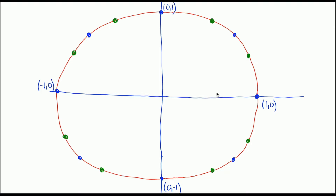Since I measure from the positive x-axis, the angle that terminates at the rightmost point is just 0 degrees. The angle that terminates at the top is 90 degrees, the left is 180 degrees, and the bottom is 270 degrees. It's worth pointing out there are lots of different angles that would terminate at the bottom — a negative 90 degree angle, for example, would also terminate there — but I'm looking for the angles between 0 and 360.